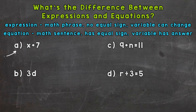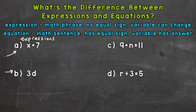For examples A and B we have expressions. As you can notice with those examples, we don't have an equal sign — they are math phrases, not the full sentence. And the variable can change. So let's talk about variables changing value.